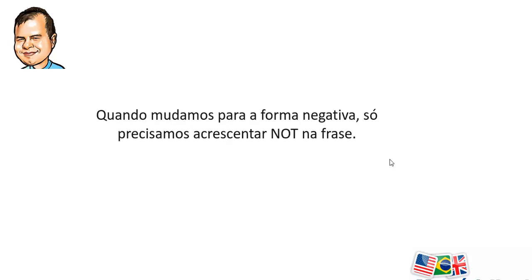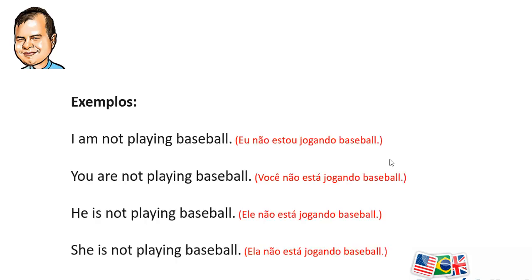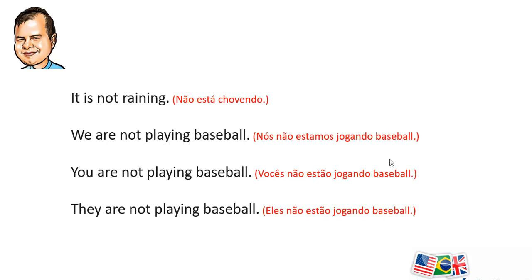Now, when we change to the negative form, all we have to do is add NOT to the phrase. Here are a few examples: I'm not playing baseball. You are not playing baseball. He is not playing baseball. She is not playing baseball. It is not raining. We are not playing baseball. You are not playing baseball. They are not playing baseball.